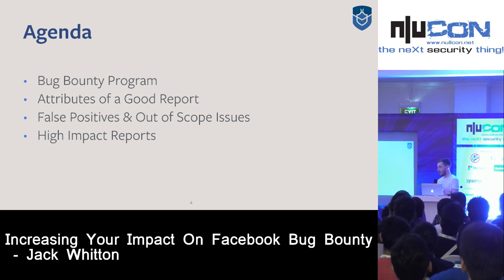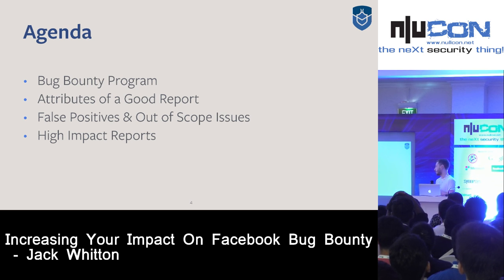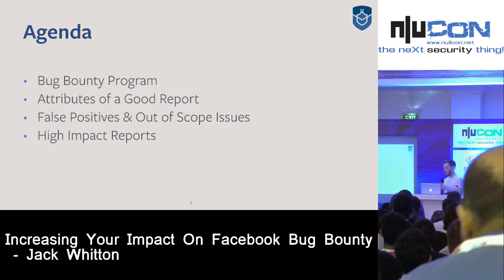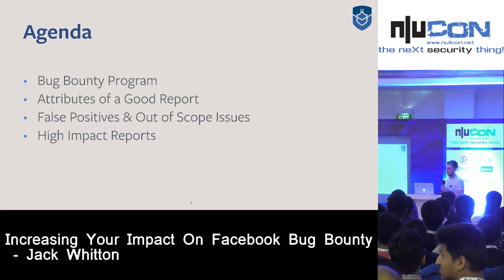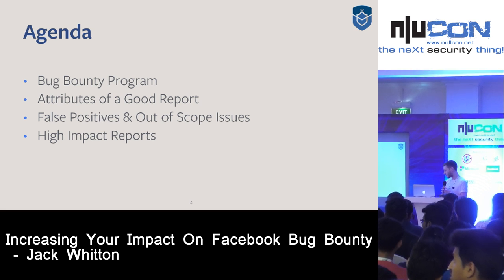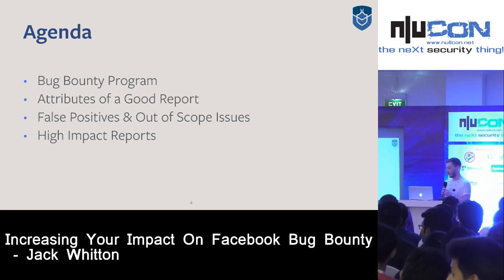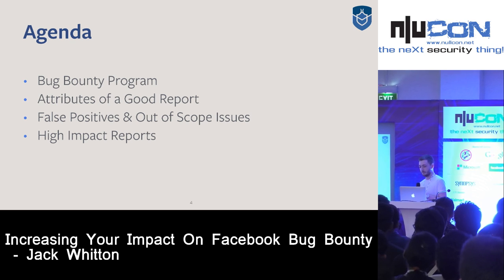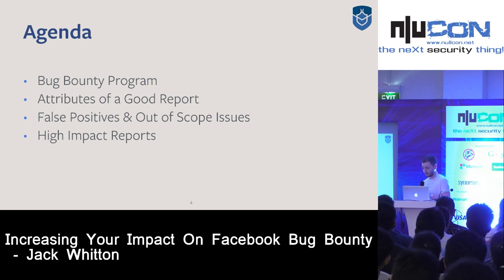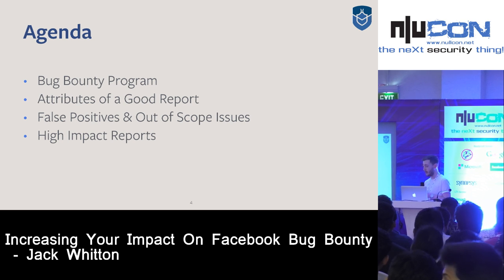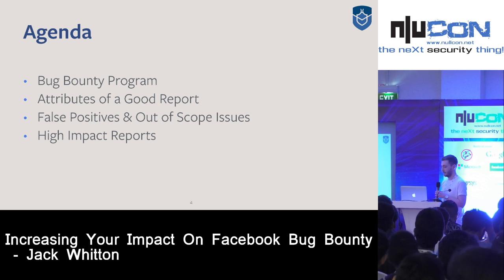I'll run through a bit about our bug bounty program, which I'm sure everyone is already aware of. Then I'm going to give some information about how when testing and submitting your report you can ensure that it's high quality and triaged quickly. Then I'll give some information about some of the false positives and scope issues we receive, and then some good examples of bugs we received in 2016.